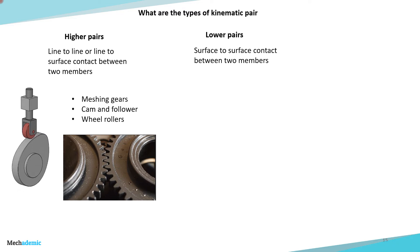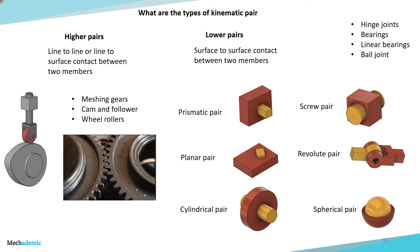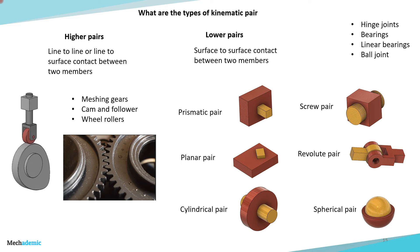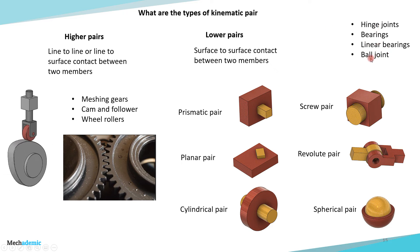Lower pairs have surface-to-surface contact between the two members. The different types of lower pairs used in machine design are: prismatic pair, screw pair, planar pair, revolute pair, cylindrical pair, and spherical pair. In all of these, there is surface-to-surface contact between the two links — unlike higher pairs where there is line-to-surface or line-to-line contact. Machine parts like hinge joints, bearings, linear bearings, and ball joints all come under lower pairs.